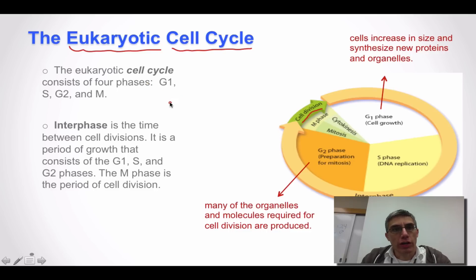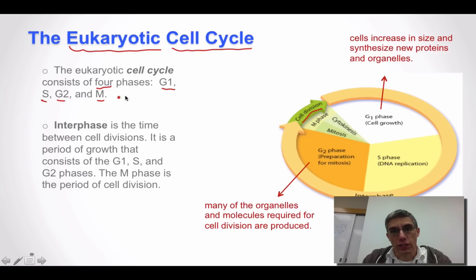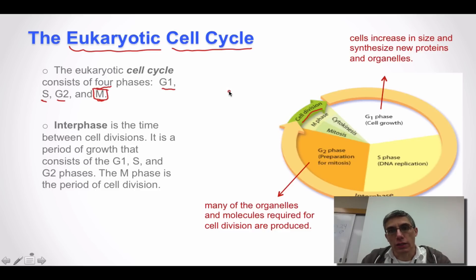The eukaryotic cell cycle consists of four distinct phases: G1, S, G2, and of course the M phase. The M phase is going to be the phase that we're actually going to focus the most on in this screencast.